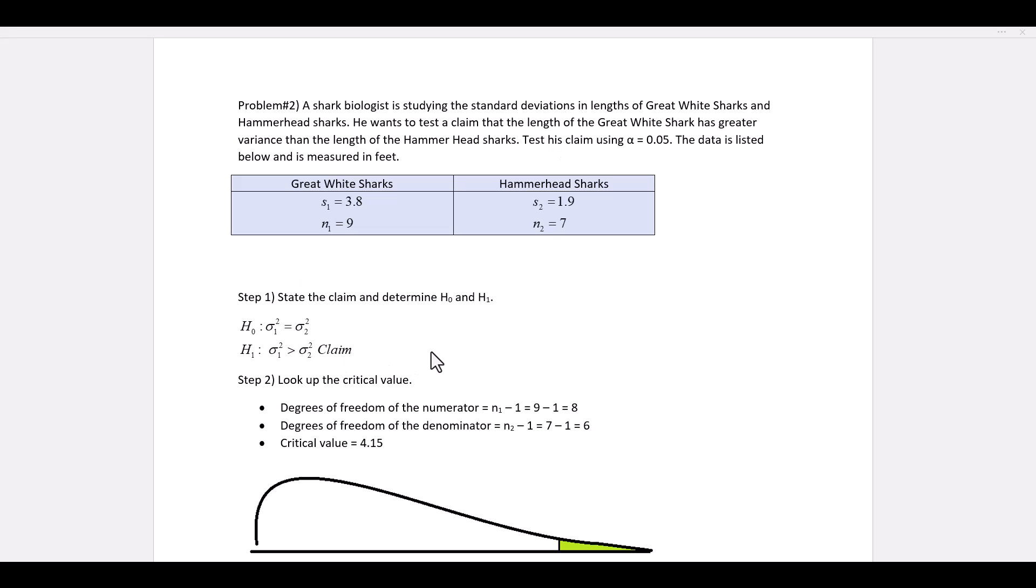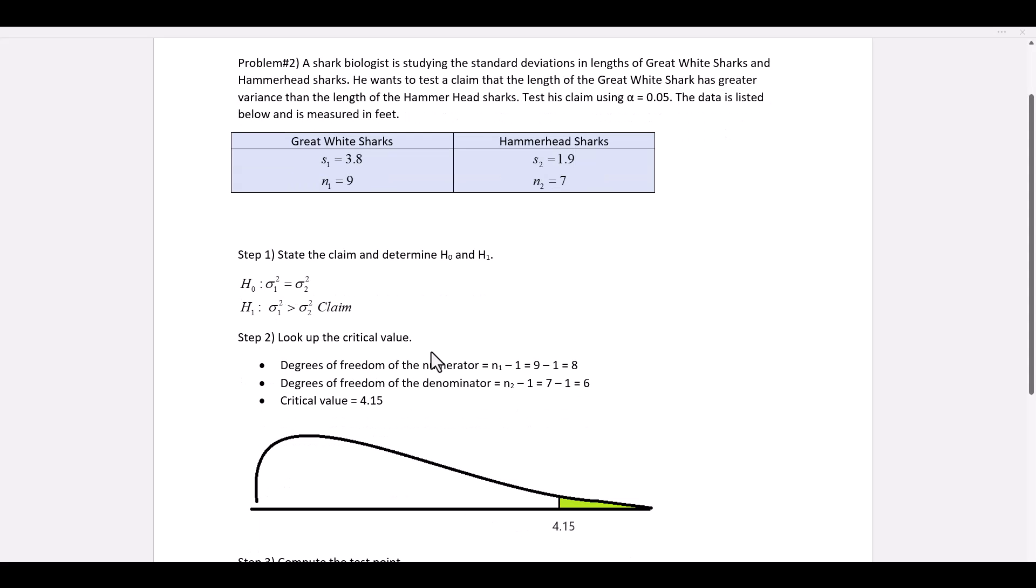Whenever we're testing for variance or standard deviations, we apply the F-test. So we have to write the claim. When we write out the parameters, we always want to use variances. So the claim is that variance 1 is greater than variance 2. That is H sub 1. H naught is that the two variances are equal.